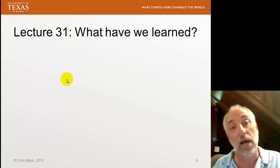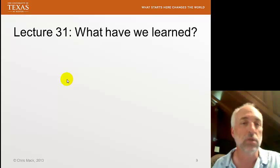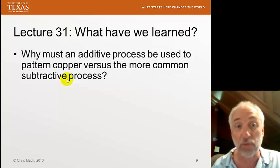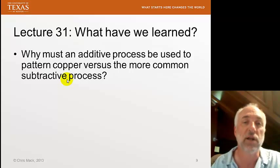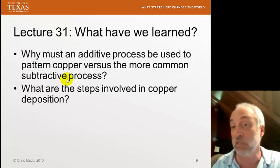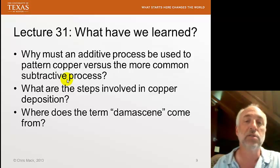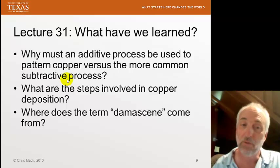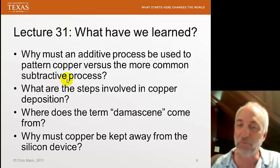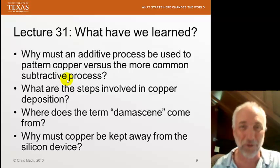That's our discussion of the copper dual damascene process. You should be able to answer these questions: Why must an additive process be used to pattern copper versus the more common subtractive process? What are the basic steps involved in copper deposition? What method do we normally use for copper deposition? Where does the term damascene come from? And — must not forget — why must copper be kept away from the silicon device? That is the last of our review questions. Until next time.